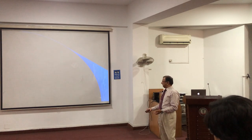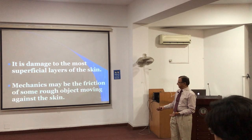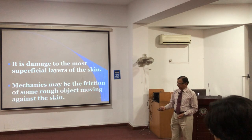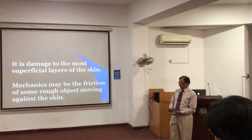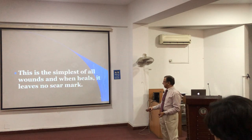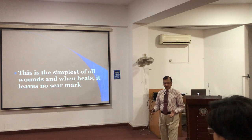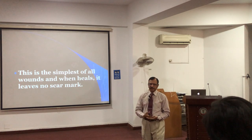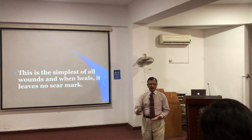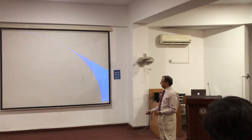The cause and effect relationship: damage to the most superficial layer is the effect, and the cause is the blunt weapon. The mechanics are friction by the blunt object. This is the simplest injury because after healing it leaves no marks, no scars — the epidermis, when sloughed off, is replaced by regrowth, so no scar mark is left.